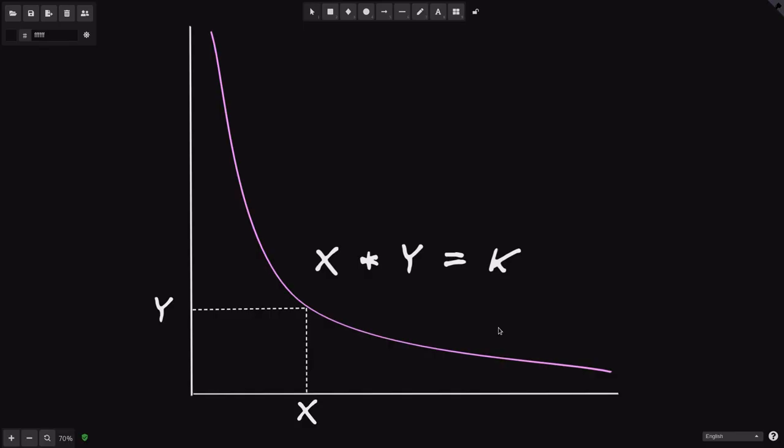The price of a token on Uniswap is calculated using a very simple formula, X multiplied by Y equals a constant K. For example, let's say that there are 50 coins of token X, and there are 20 coins of token Y. Then our K value will be 50 times 20, which is equal to 1000. And this K is a constant value. So it will stay the same no matter how X and Y change.